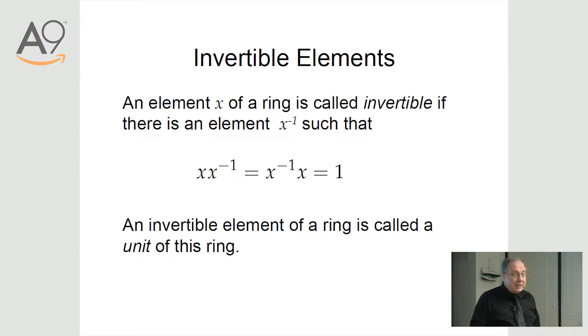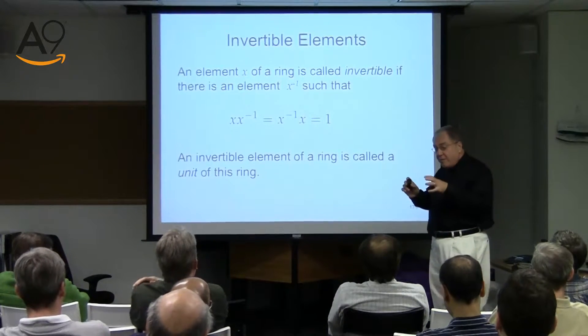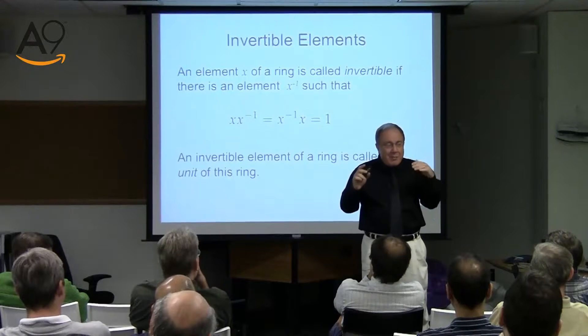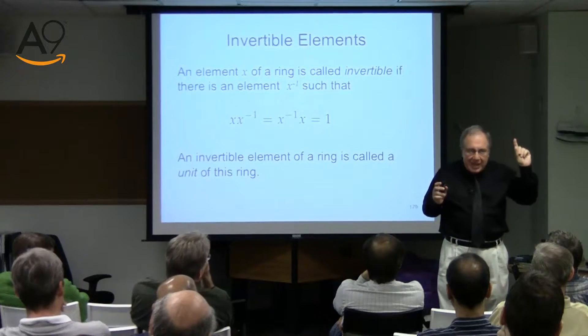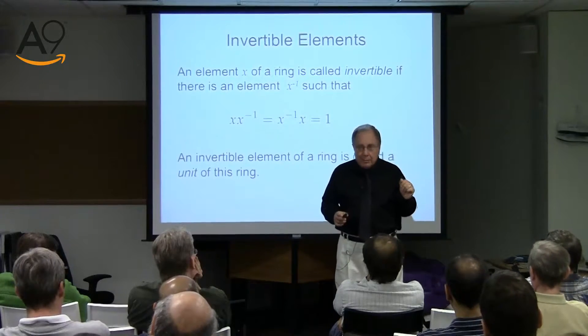Some rings have invertible elements. In fact, every ring has at least one invertible element: one. The inverse of one is one. If we have many invertible elements — people also call them units — they constitute a multiplicative group. Among integers, the units are one and minus one. Among Gaussian integers, there are four units: one, minus one, i, and minus i.